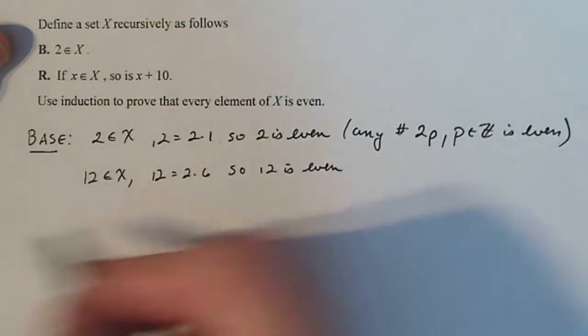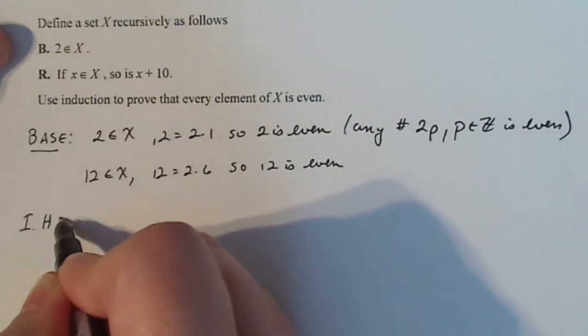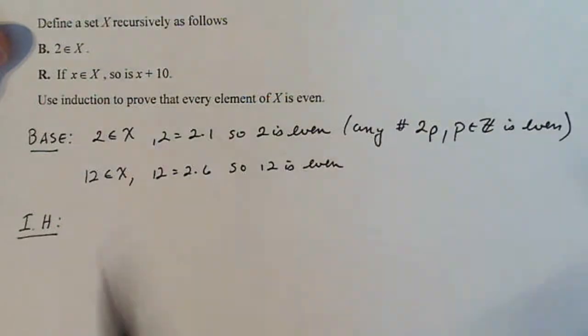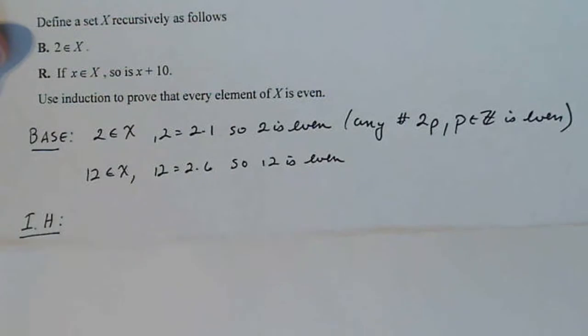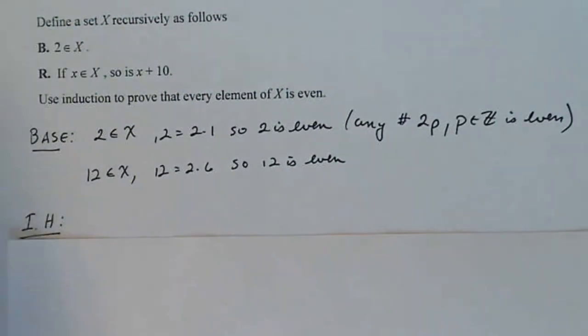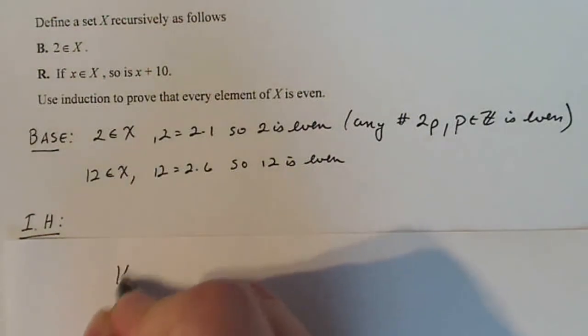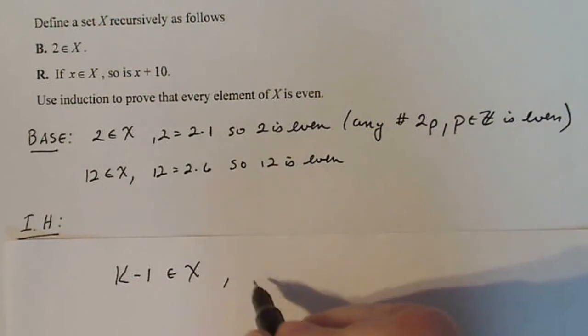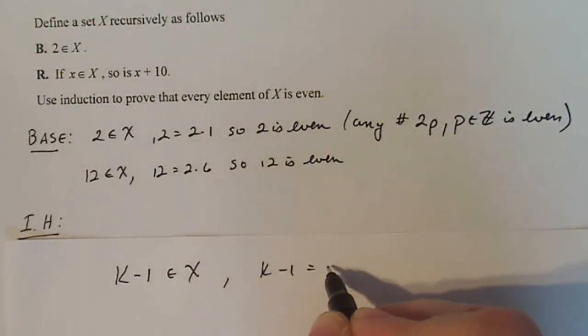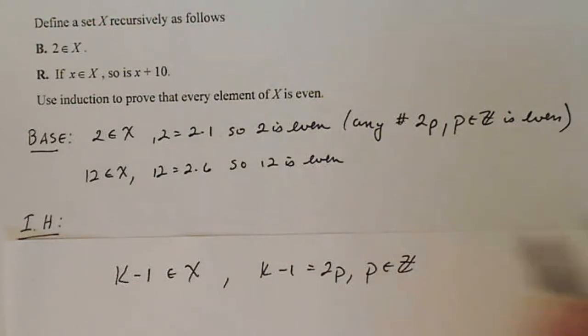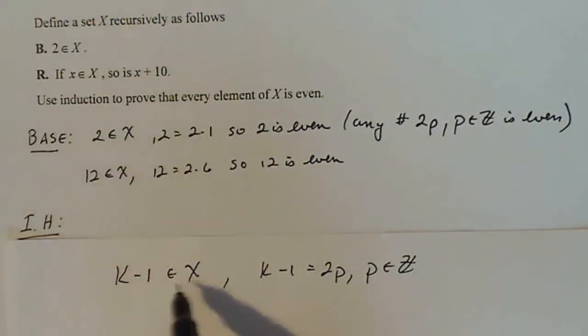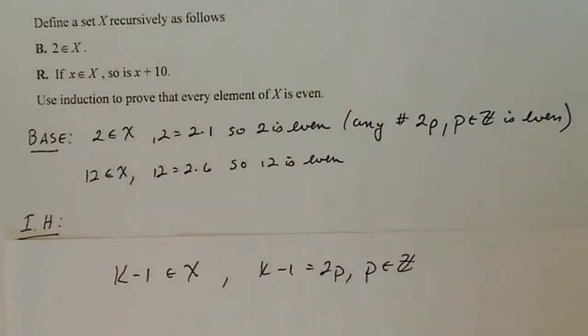Okay, now I fiddled around with this for quite some time to kind of figure out how to think about this. All right, so let me get a scratch sheet of paper here to kind of talk about what I did. The typical inductive hypothesis is one that says okay, I'm gonna say that k minus 1 is in X, and then if k minus 1 is in X that means that k minus 1 is equal to 2p for some p in Z. Okay, because if I'm doing an inductive hypothesis I have to assume that this step is true.